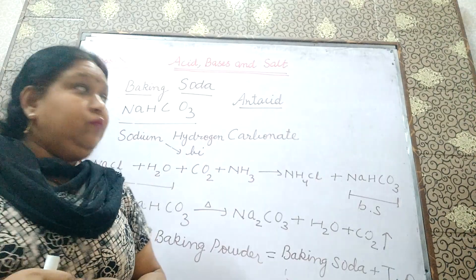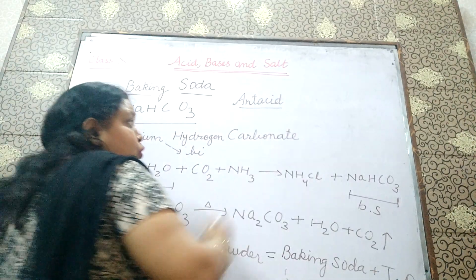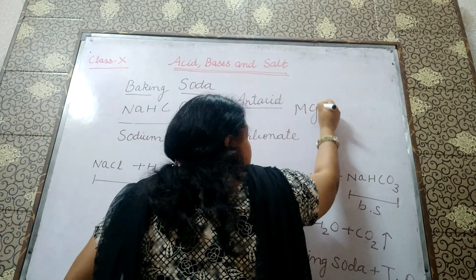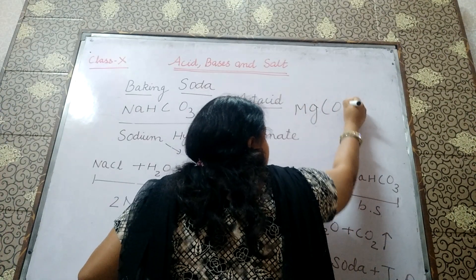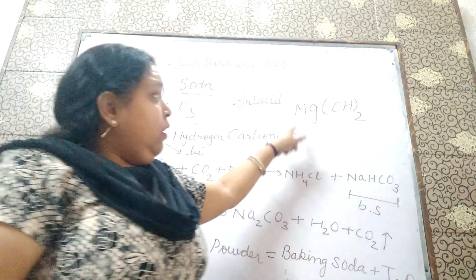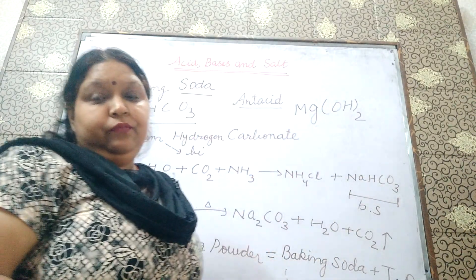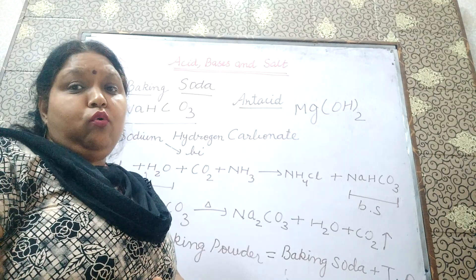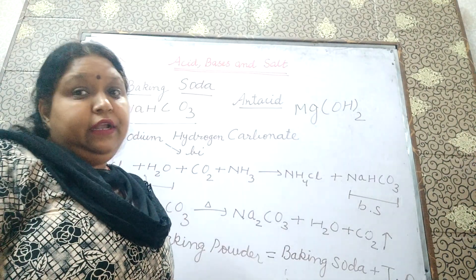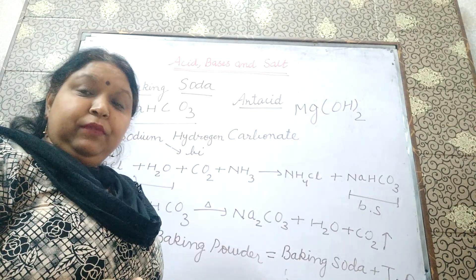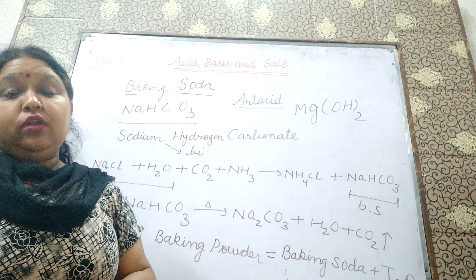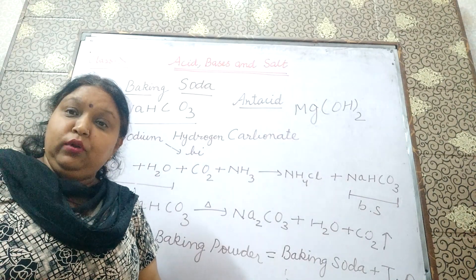We can also take Eno, which contains Mg(OH)2 — magnesium hydroxide. It is also a mild base which is used for treating acidity. Then next, in soda acid fire extinguishers, we are using baking soda.